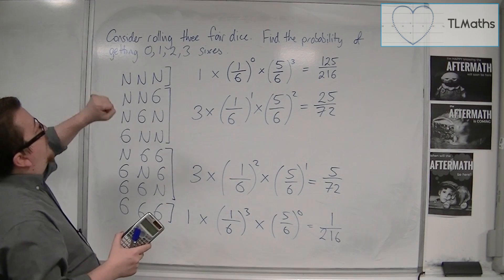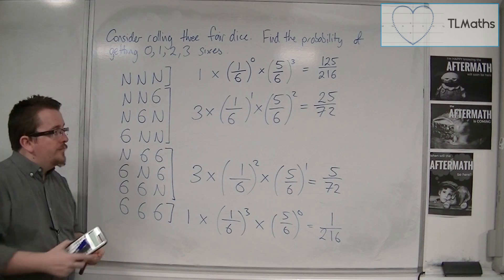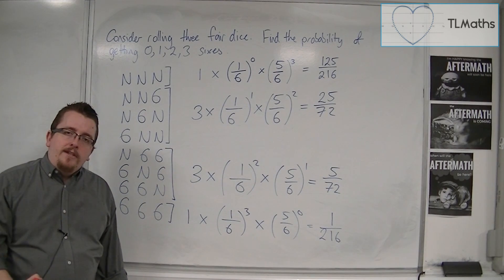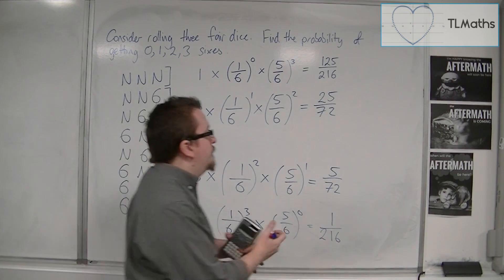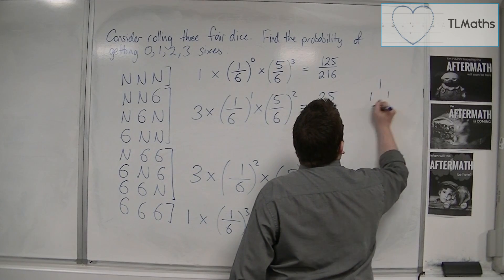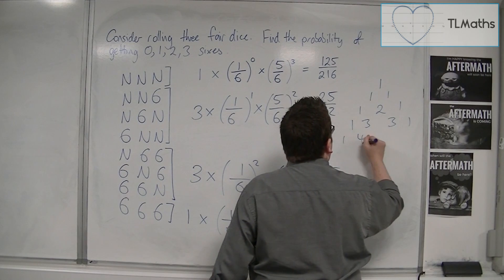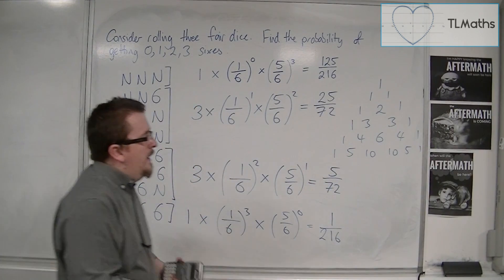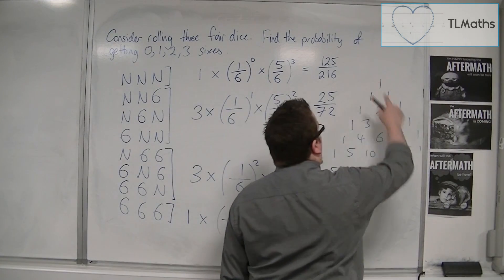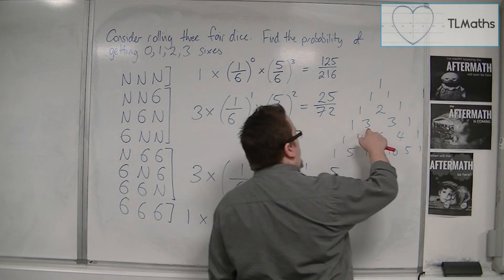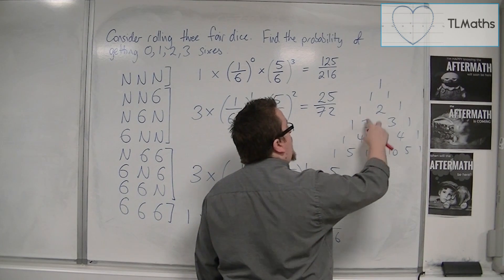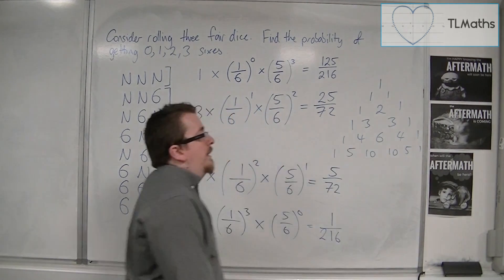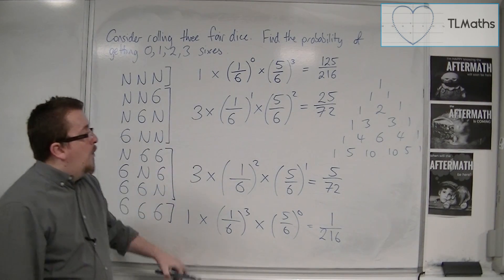So I have found the probability in each of those four cases. The coefficients — 1, 3, 3, 1 — you might recognise these as relating to Pascal's Triangle, which is a very famous and useful triangle. The 1s are always down the outside, and each number inside is the sum of the two terms above it: for example, 3 = 1 + 2, 6 = 3 + 3, 10 = 6 + 4. The row 1, 3, 3, 1 is this row in Pascal's Triangle.